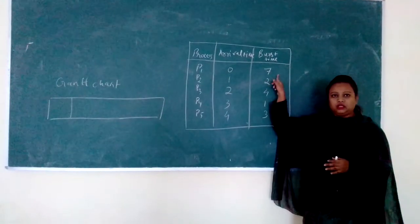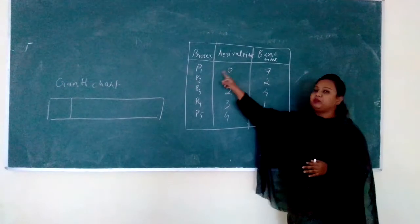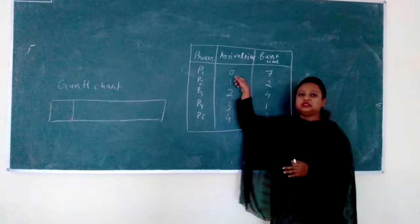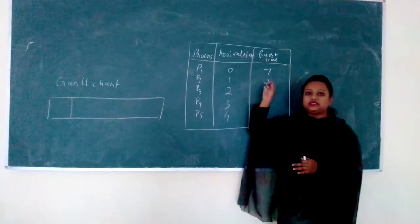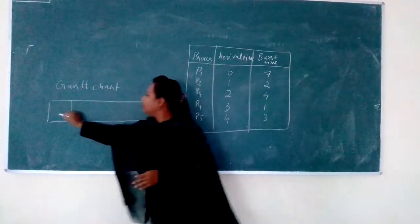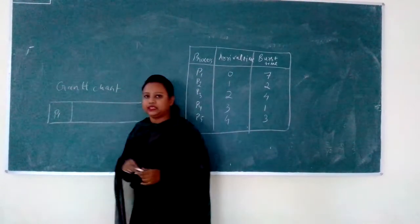CPU will first look for all the processes that have come and it will see whose burst time is more. 7 is the burst time for P1. But since it has come at arrival time 0, it is very likely that it will be assigned first in the Gantt chart. So P1 has been assigned first for execution.